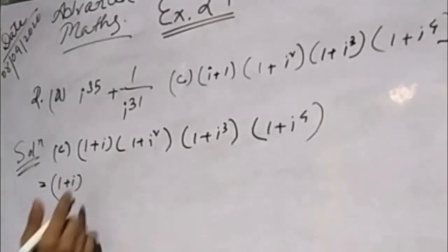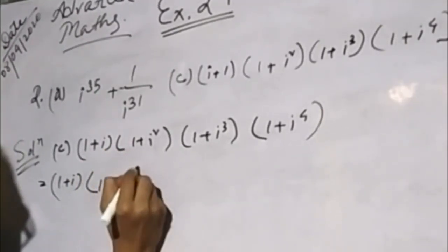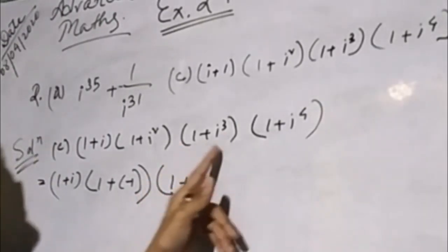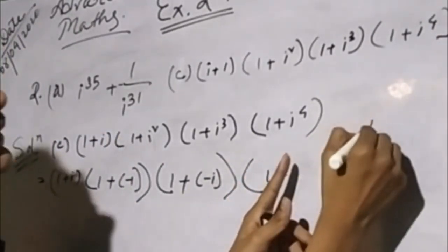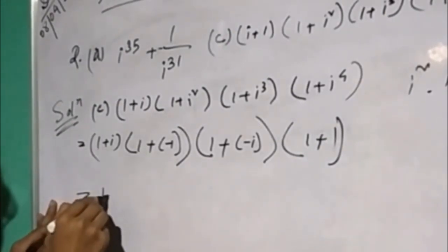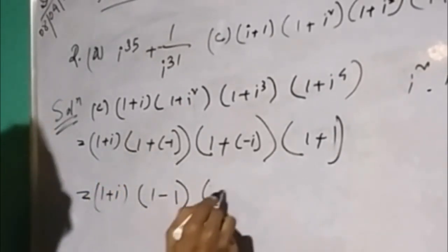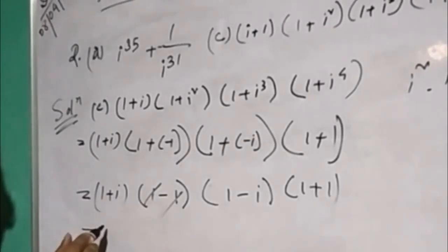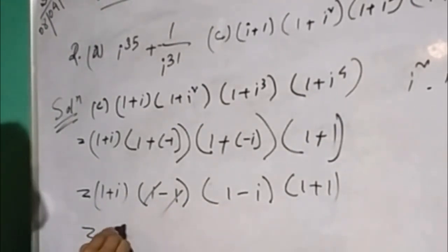1 plus i, I will do c2, 1 plus i square, i square is not a complex number, minus 1, whole into 1 plus i cube is minus i, whole into 1 plus i to the power 4. i square into i square means 1. Equal to: 1 plus i, whole, one minus i, whole, one minus i, whole, one plus i, whole. 0, over 0. So the answer to question number 1 is zero.